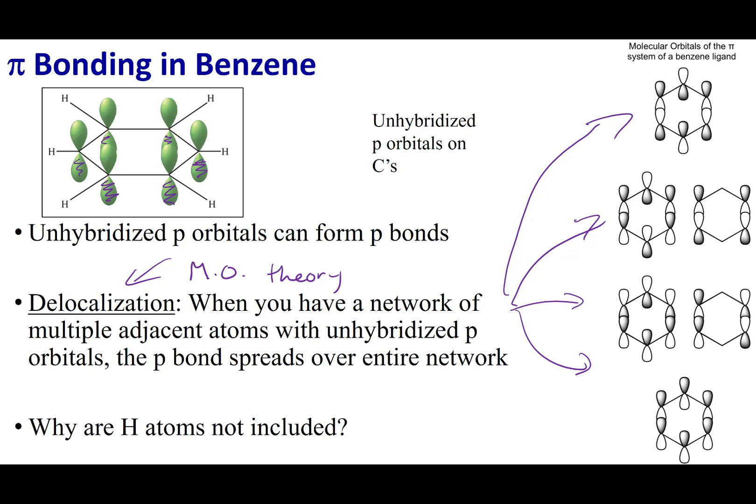That gets us the best description of how these electrons are spread out across the molecule. Hybridization doesn't really deal with multiple p orbitals altogether.